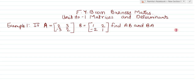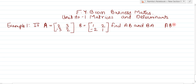So the example is: if A matrices equals 2, 3, minus 3, 2 — so the order of matrices A is 2 by 2, that means 2 rows and 2 columns. And B equals 1, 2, minus 2, 1 — so the order of B matrices is 2 rows and 2 columns. Horizontal is row and vertical is column. So find AB and BA.